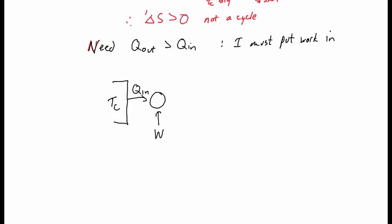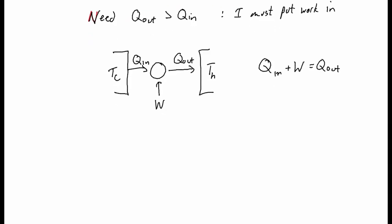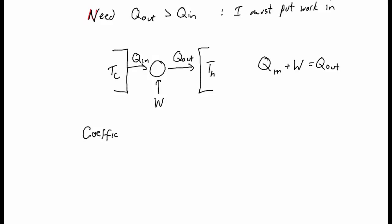So here's what an actual refrigerator looks like. Heat flows in from the cold reservoir, work flows in, and then heat flows out. Notice that Q_in plus W equals Q_out.